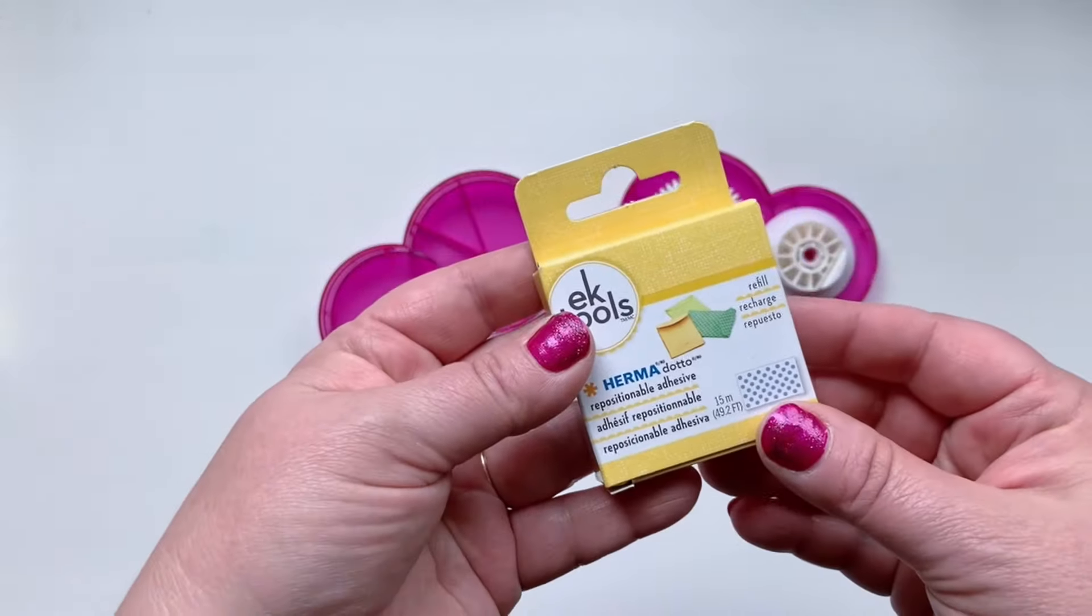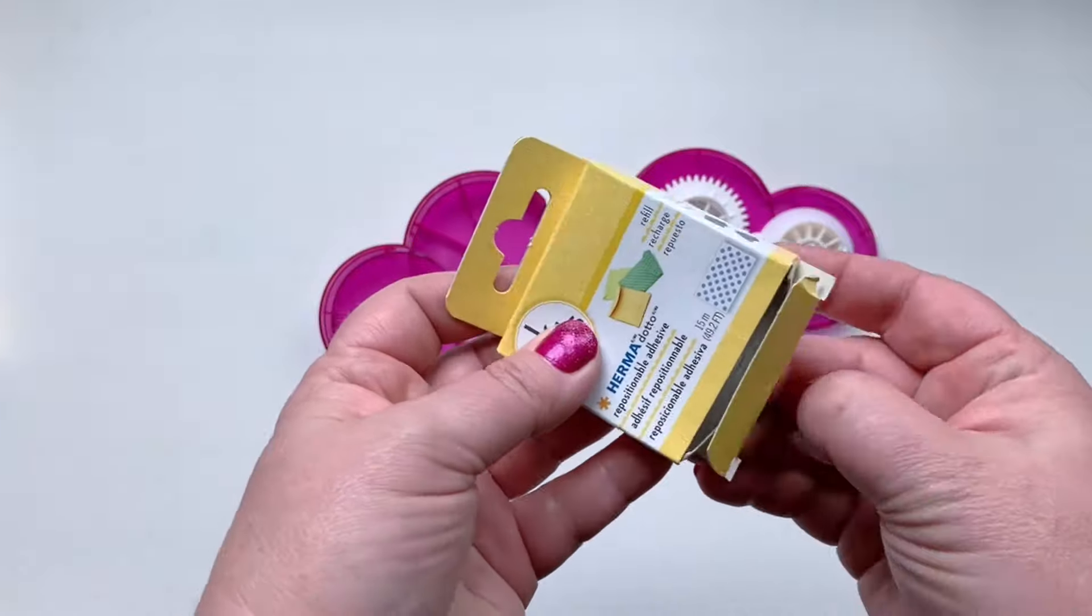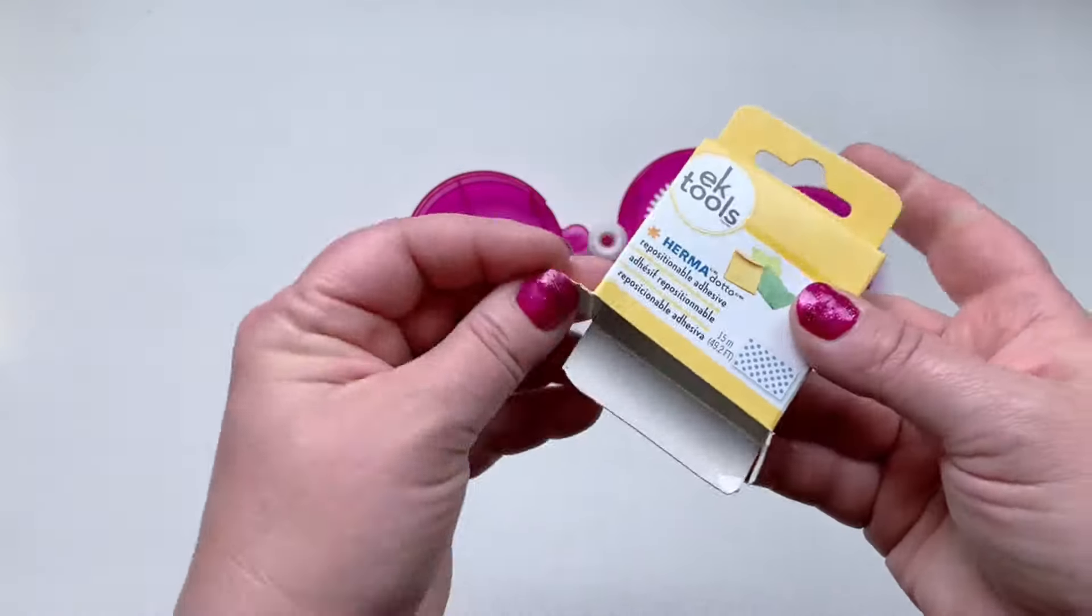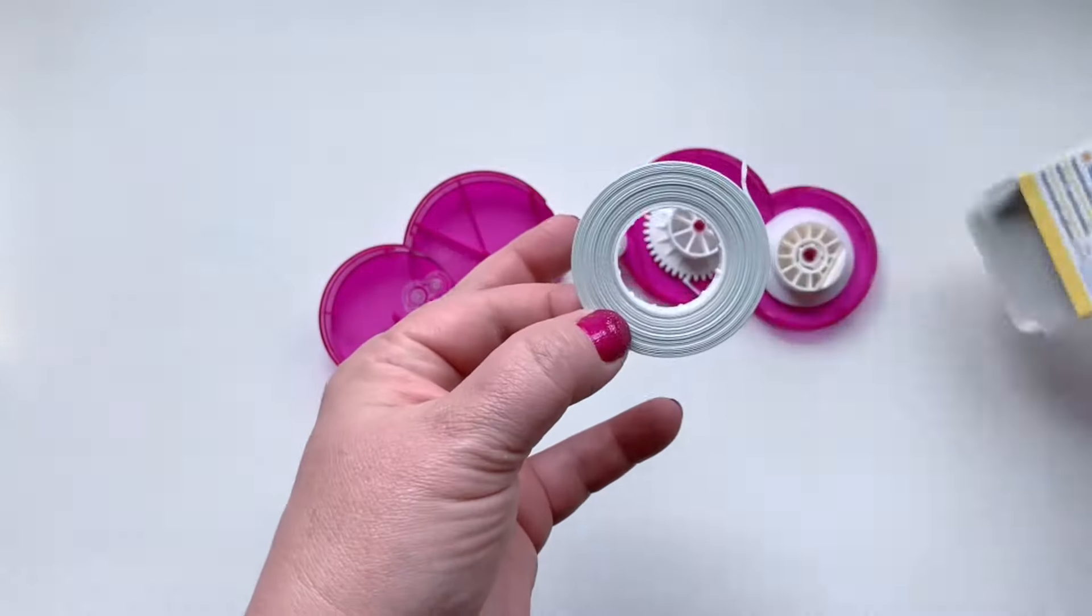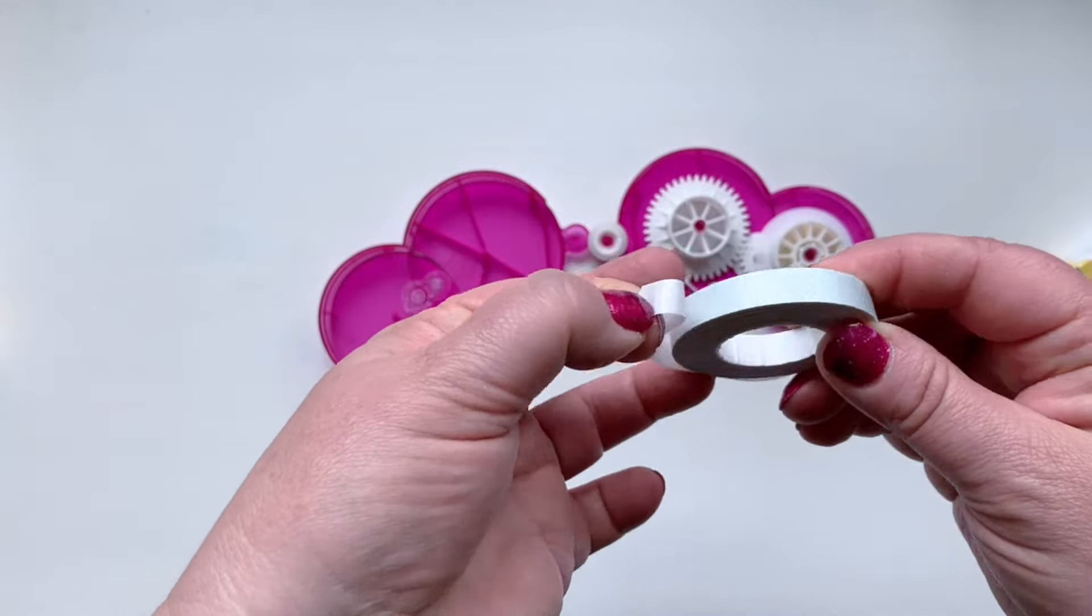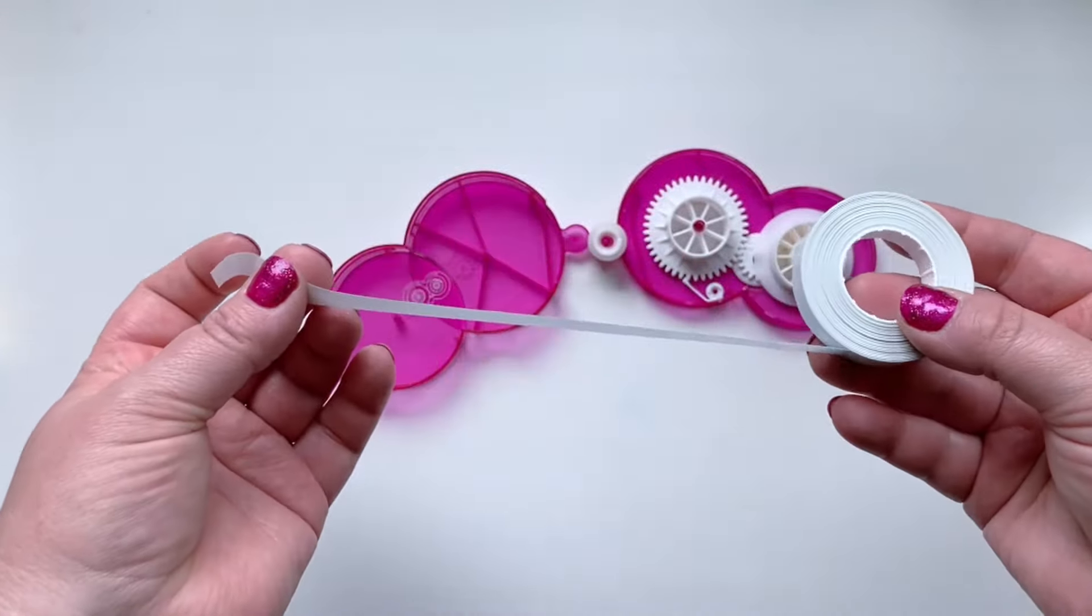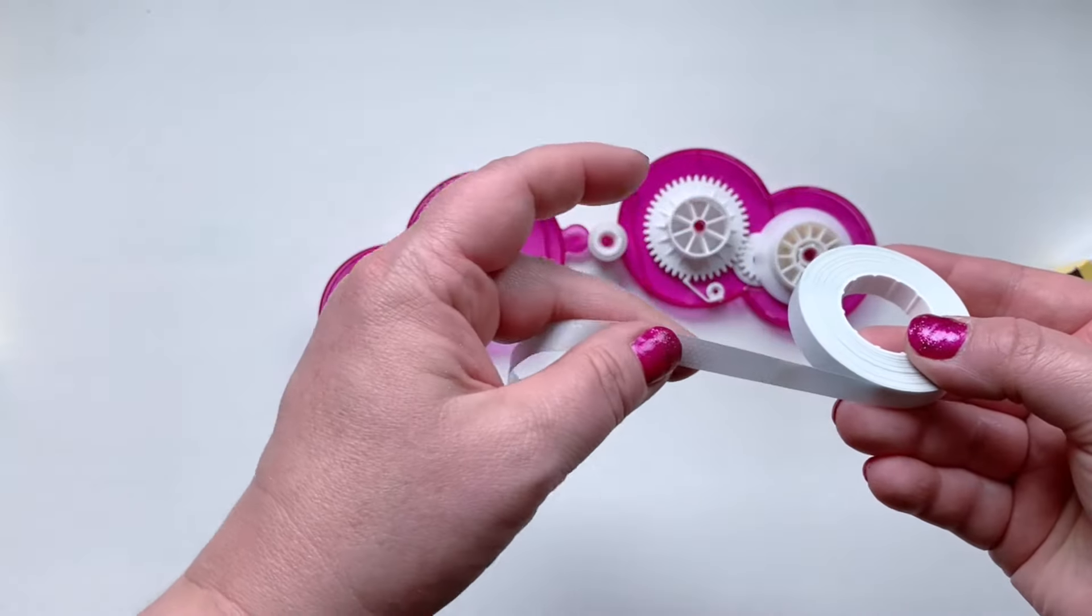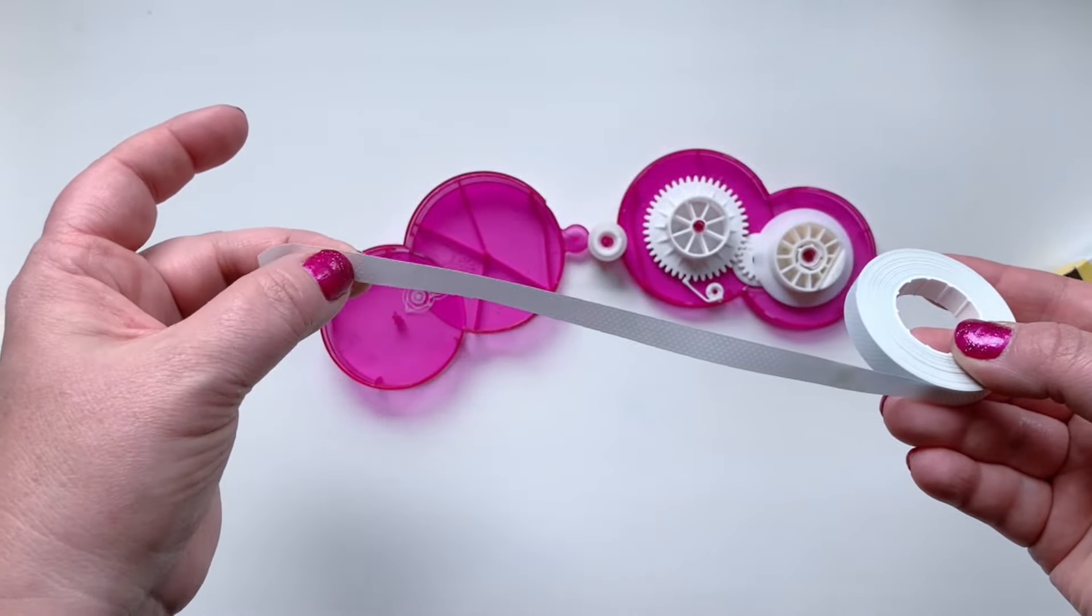Now we're going to refill. Take out your refill from its box and you'll notice that the end of it is stuck down, so you want to peel that away. Feel this tail of the tape. It's bumpy, but it's not yet sticky. That gives you some tail to work with as you refill.